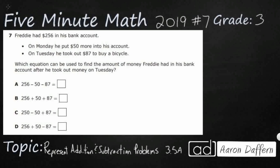So Freddy's got some money in his account. He's going to start with $256 and he's going to put $50 more, and then he's going to take out $87. If you notice, all of our answer selections here include those three numbers: 256, 50, and 87. So we're needing to write an equation that can be used to find the amount of money he had after this right here, where he took his money out. So we want to basically figure out after he's done all this, how much money does he have left.